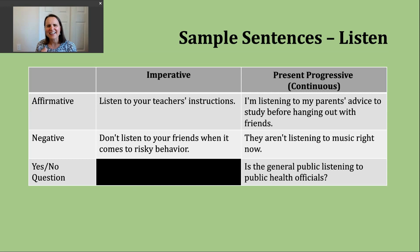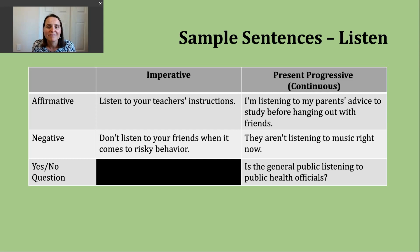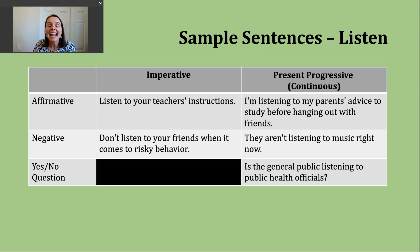Many people feel that telling someone to do something can seem a little rude. You can soften an imperative and make it more polite by adding the word "please" — at the beginning or at the end of the sentence, but not in both places. The affirmative example: "Listen to your teacher's instructions" — something a parent might say to their child, encouraging them not only to hear the sounds but to follow the directions being given. For a negative imperative, start with "do not" or "don't" and then the base verb: "Don't listen to your friends when it comes to risky behavior."